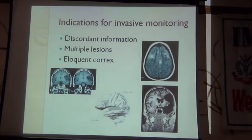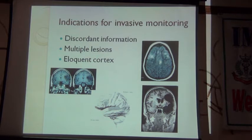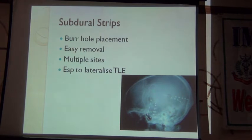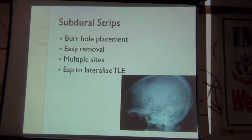When do we do invasive monitoring? It is when the information is discordant — the clinical history suggests one side, the EEG is ambiguous, the MRI points another way, or when there are multiple lesions and we do not know which is the main culprit, or when lesions are close to important areas like the motor cortex. One form of invasive monitoring is placing subdural strips through two burr holes with electrodes on either side. You put them in, monitor the patient for about a week, then remove them and discuss with neurology colleagues and the neurophysiologist to decide whether to offer surgery.